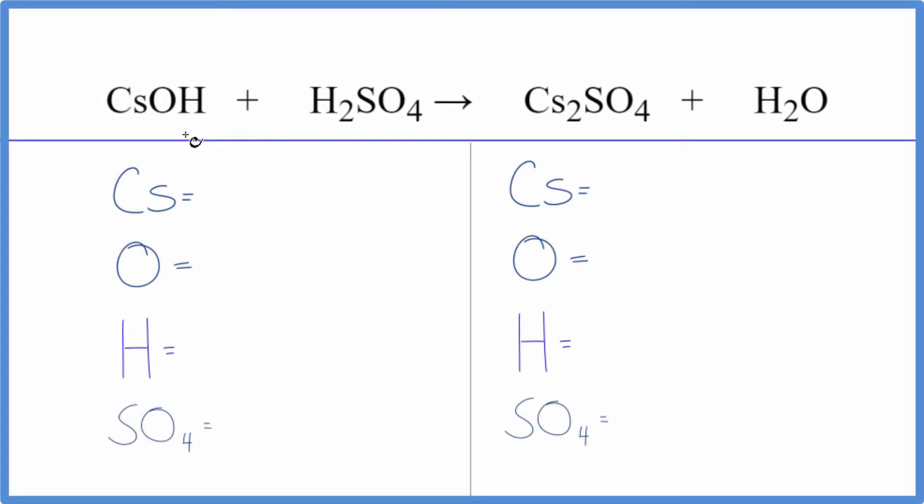In this video, we'll write the balanced equation for CsOH plus H2SO4. This is cesium hydroxide and sulfuric acid. This is a base and this is an acid. It's a neutralization reaction, so we get this salt here and H2O, water.